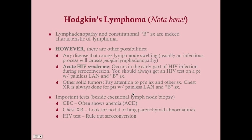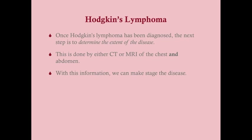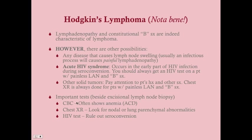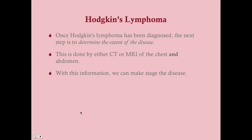Once Hodgkin's lymphoma is diagnosed by excisional lymph node biopsy, the next step is to determine the extent of the disease, which dictates treatment. This staging is done with imaging — either CT or MRI. MRI is more accurate, but CT is cheaper and done more often. You image the chest and abdomen to assess how far the lymphoma has spread, as physical examination alone is insufficient.